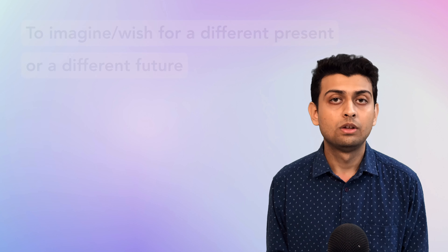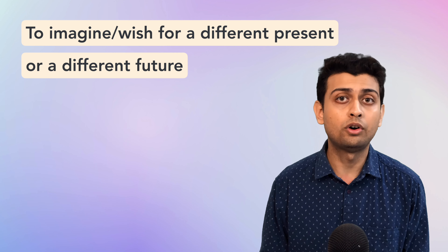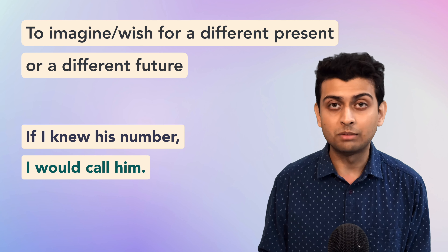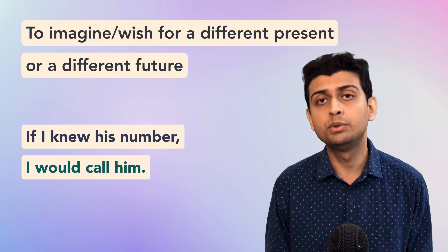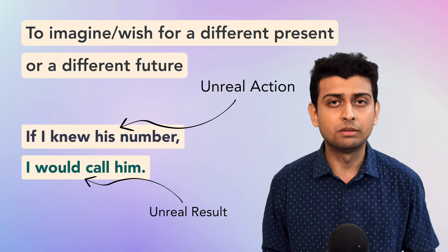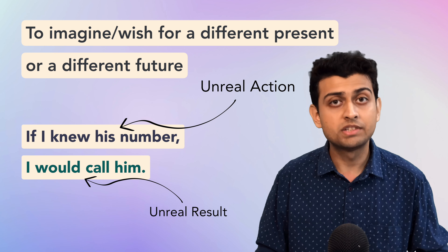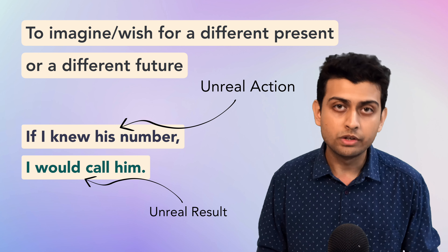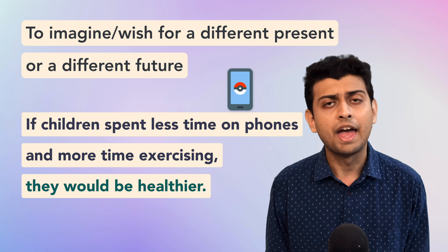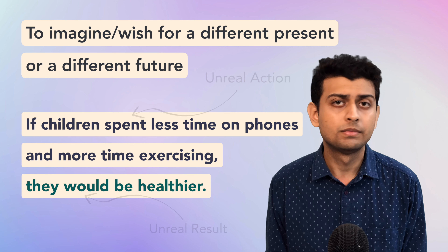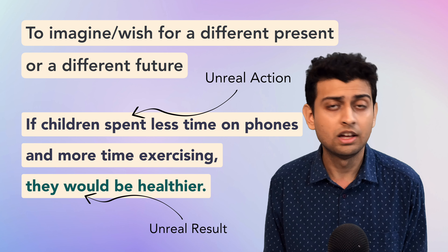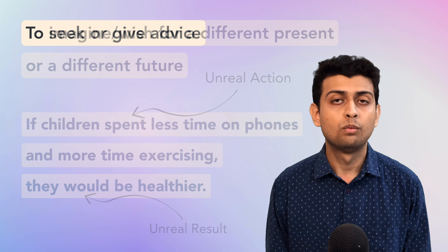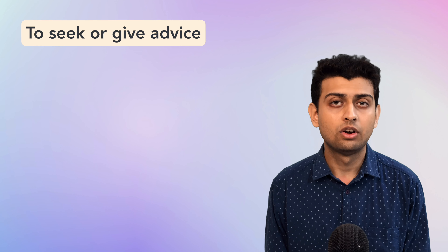We use the second conditional to imagine or wish for a different present or future. For example: 'If I knew his number, I would call him' — the reality is I don't know his number, so I can't call him; it's a hypothetical, unreal situation. 'If children spent less time on their phones and more time exercising, they would be healthier.' They probably don't spend more time exercising, but if they did, they would be healthier. We also use the second conditional to seek advice or give advice.